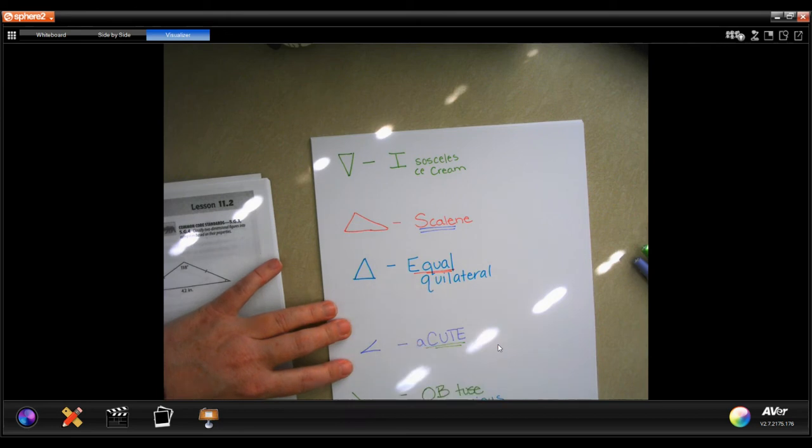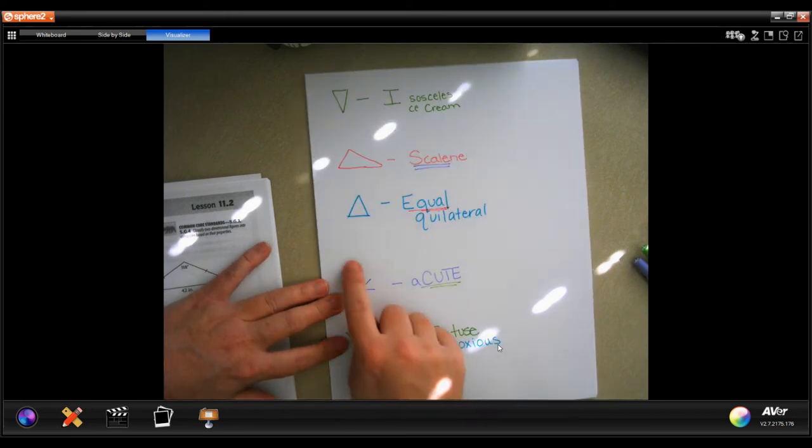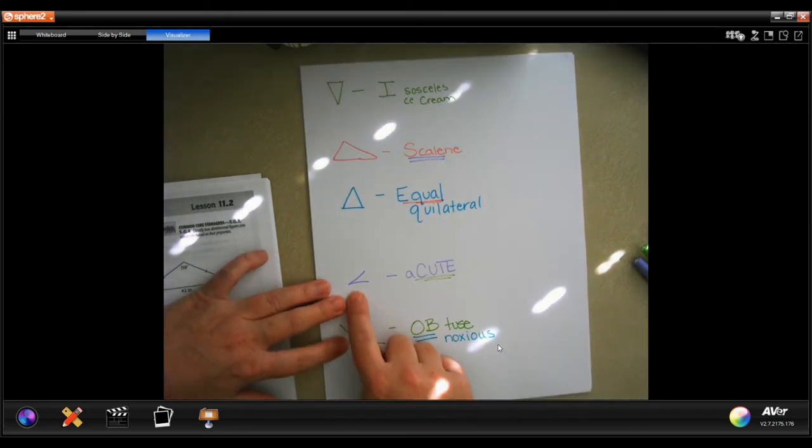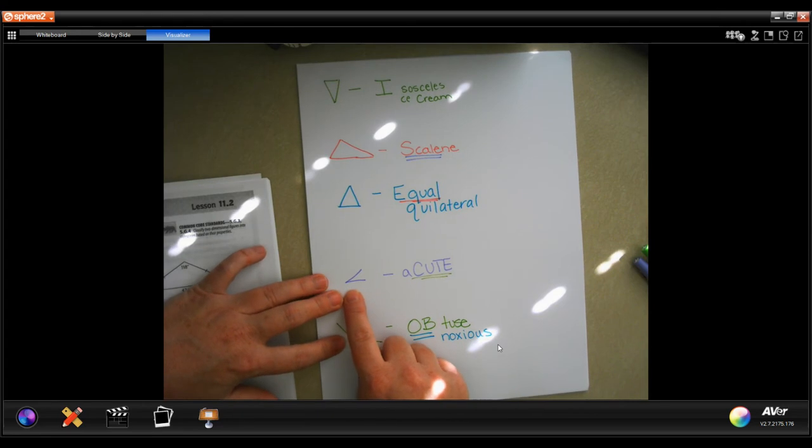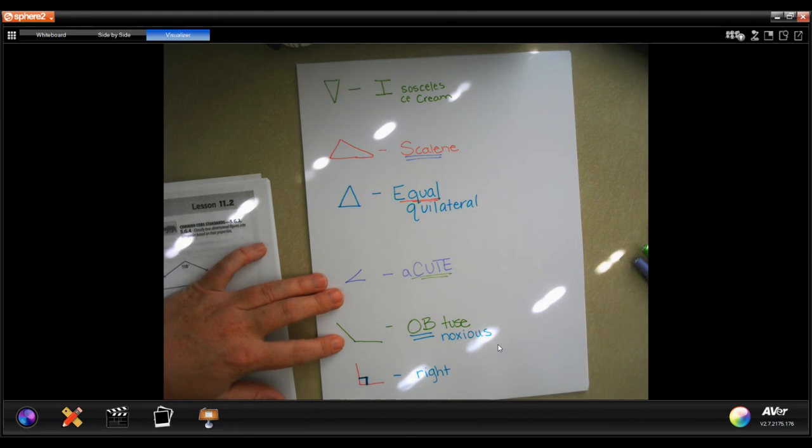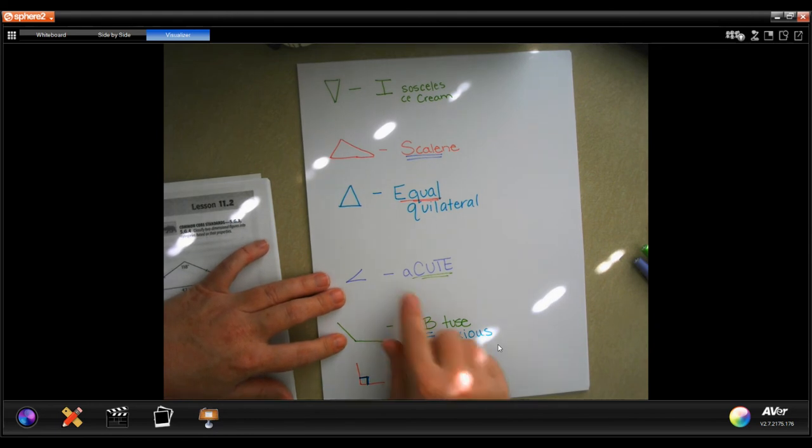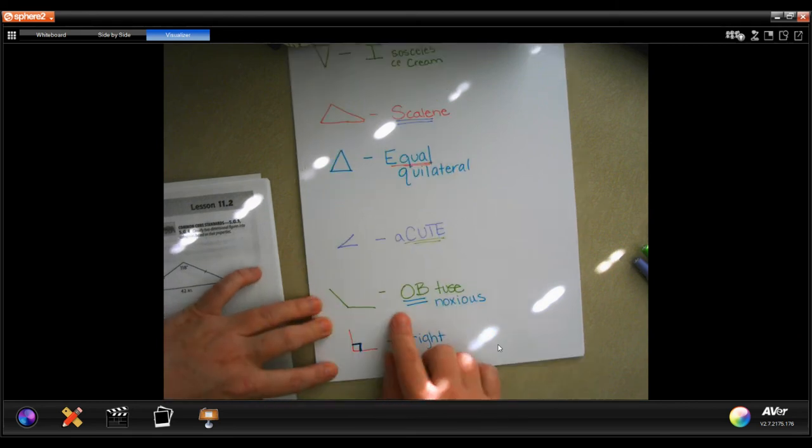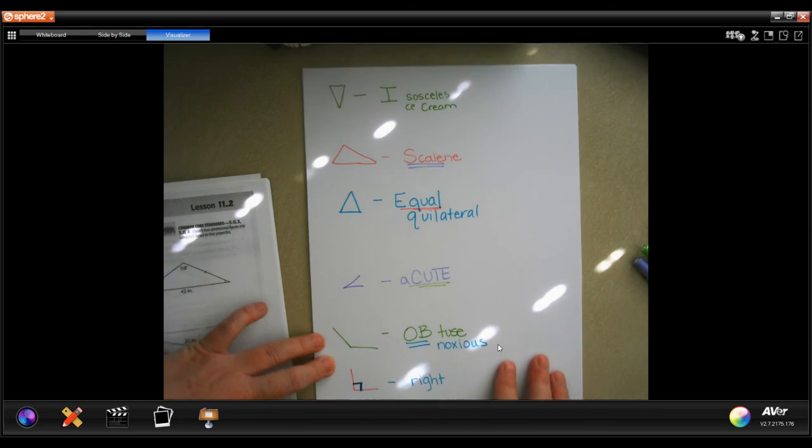Equilateral means all the sides are equal, that one's kind of easy to remember. For the angles, a little angle that's less than 90 degrees is acute, and I remember that by like a cute little kitten or something. Cute means small. Obtuse I remember by obnoxious, means louder, bigger than it needs to be. And then a dead giveaway for a right angle is that square right in the corner.